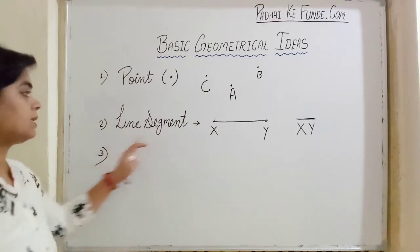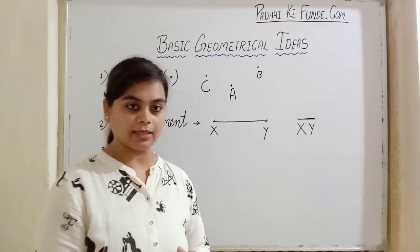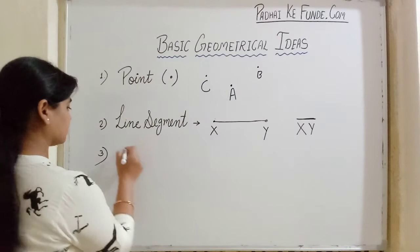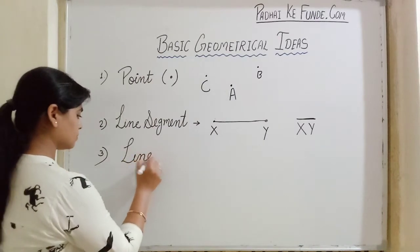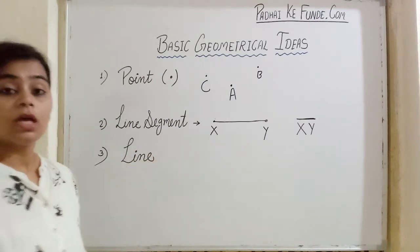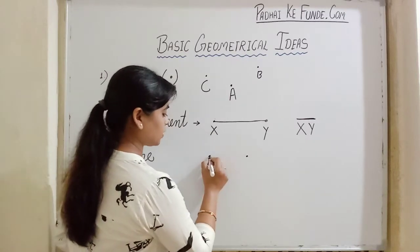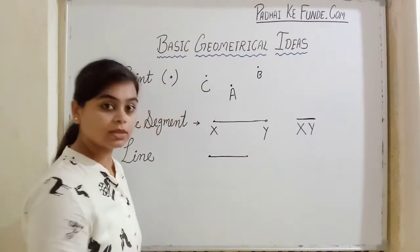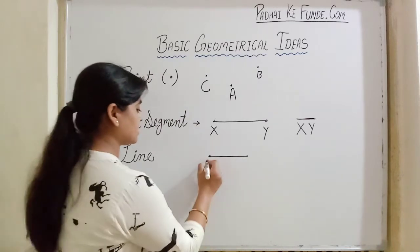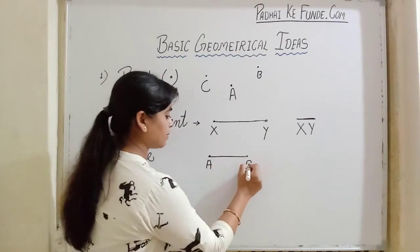Now, line segment means part of a line. Then what is a line? If we talk about a line segment, that means it has two points. When we join these both, then we get a line segment.